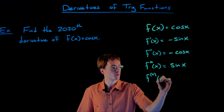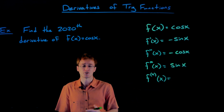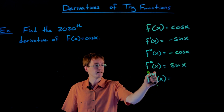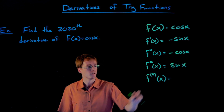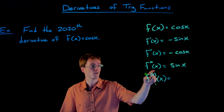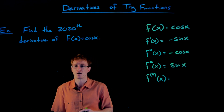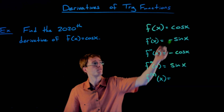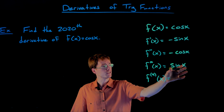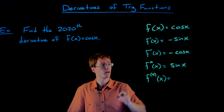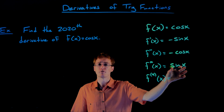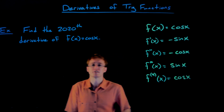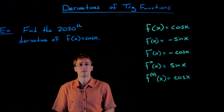Remember, we switch our prime notation slightly once we get past the third derivative. In the superscript or exponent, we put the number of the derivative inside its own set of parentheses. Those parentheses are important so we don't mix it up with taking the fourth power of our function f. This notation tells us to take the fourth derivative of cosine, which is just the derivative of sine — and the derivative of sine is cosine.